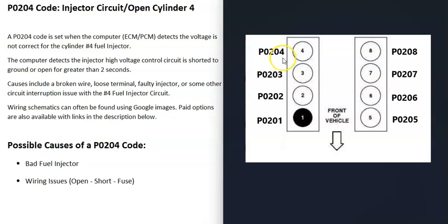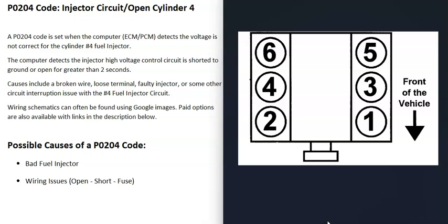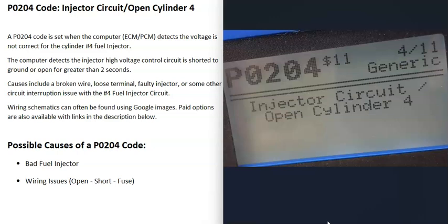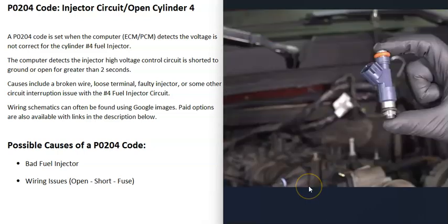So the P0204 is pointing to cylinder number four. You can Google your engine's cylinder locations or firing order since there are differences, and once you locate cylinder number four, that's the one to look at. The main things that cause this code are either a bad fuel injector or a problem with the wiring going to the fuel injector.